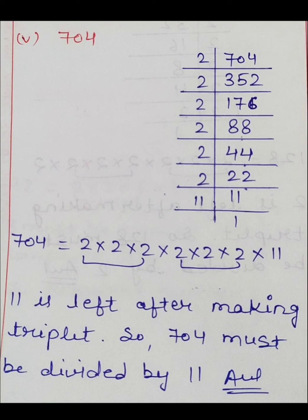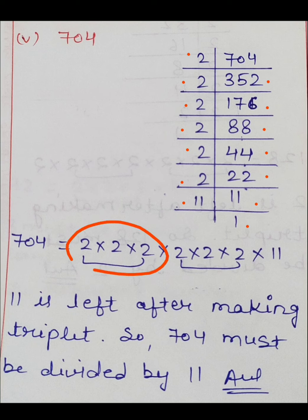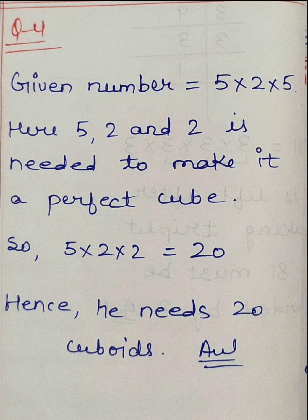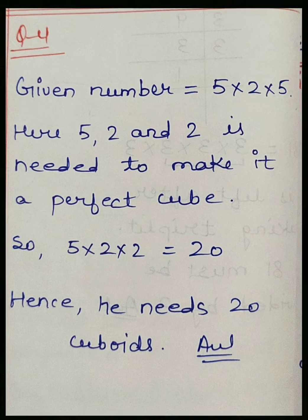Last one is 704। 704÷2=352, 352÷2=176, 176÷2=88, 88÷2=44, 44÷2=22, 22÷2=11, 11÷11=1। 2 आया 6 times — पहला triplet complete, दूसरा triplet complete। Extra बचा 11। 11 is left after making triplet, so 704 must be divided by 11 to make it a perfect cube।